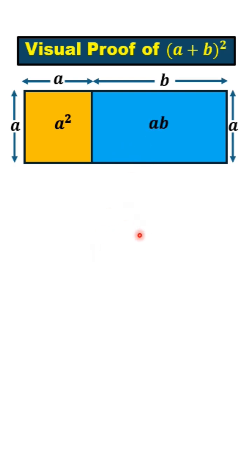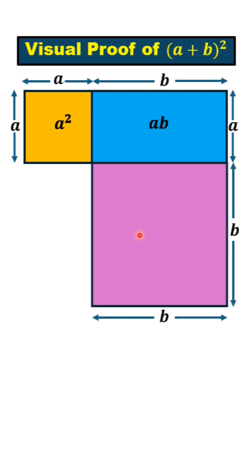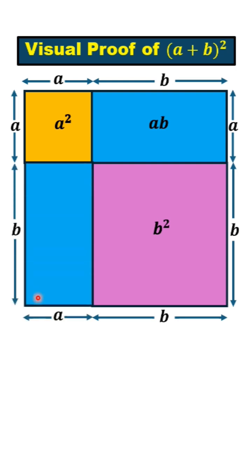We draw another square with side length b. The area of this square is equal to b². This is a rectangle with side lengths a and b, having area equal to ab.